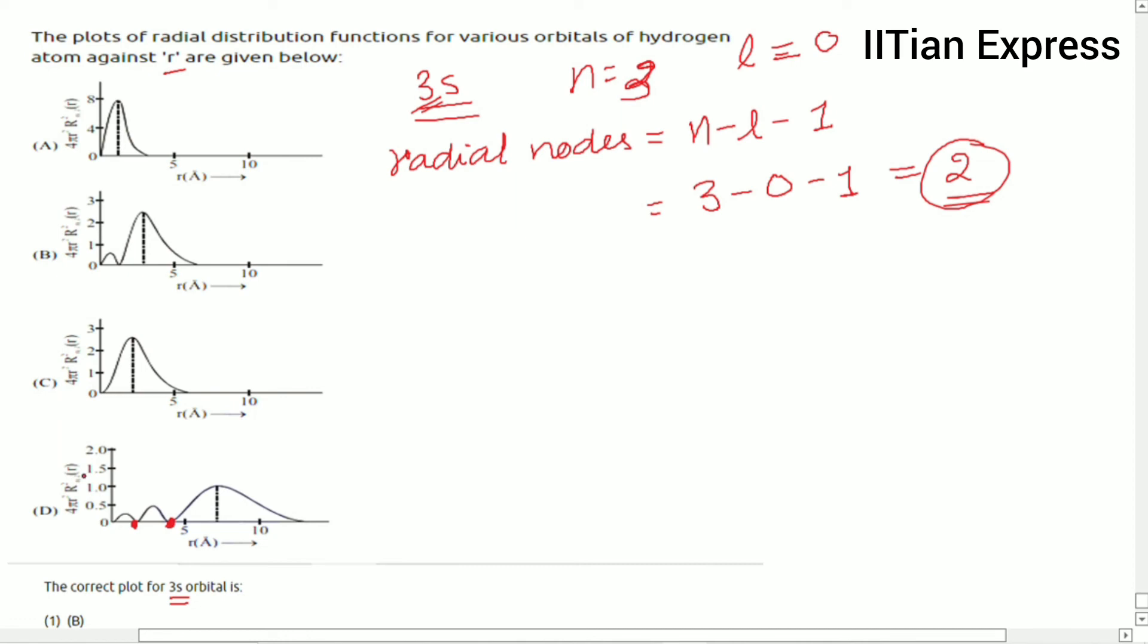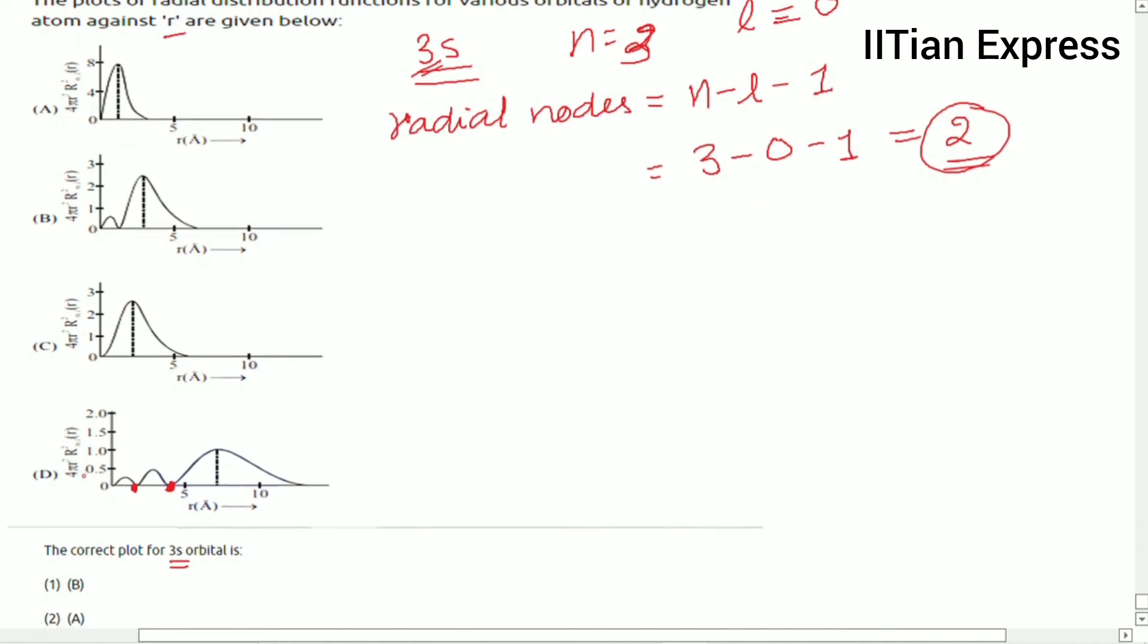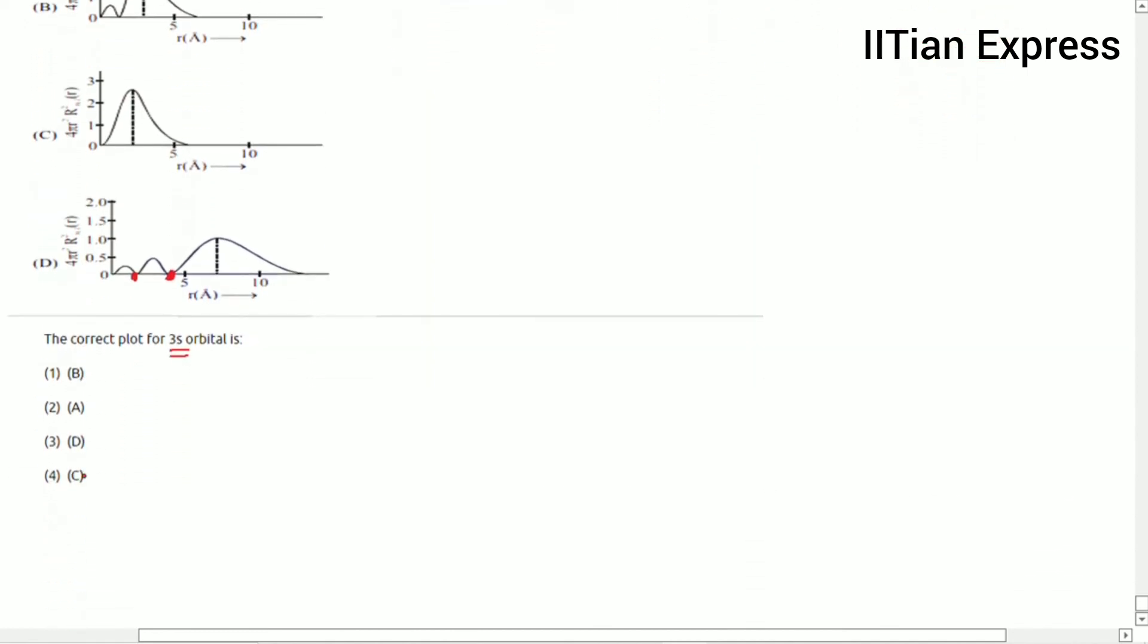Graph D, plot D is the correct plot for 3s orbital. Hence option D is the correct answer.